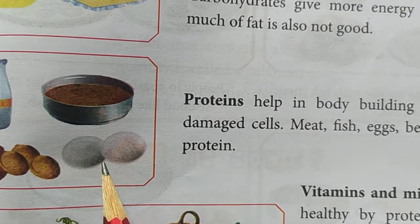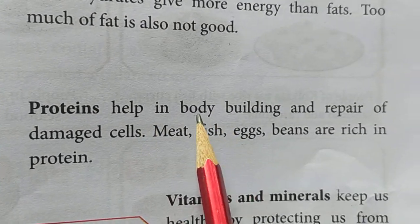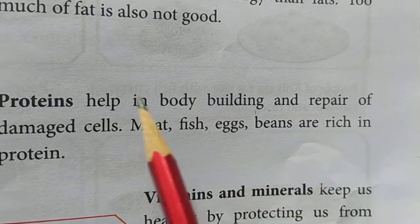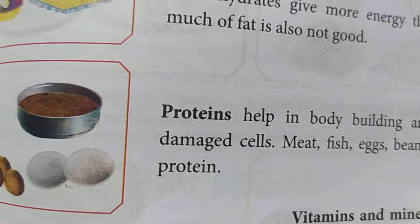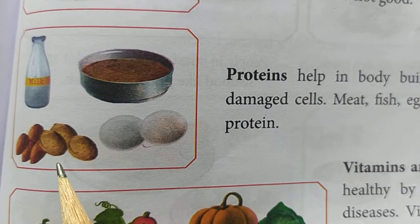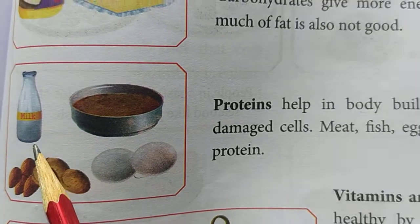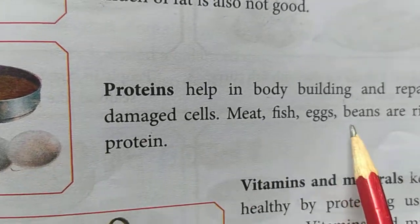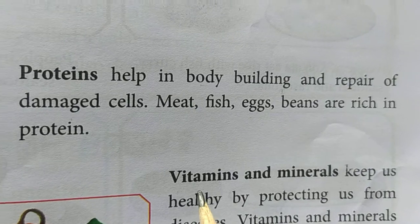And proteins — proteins help in body building and also repair damaged cells. In which food items can we get proteins? Milk, fish, eggs, and beans are rich in proteins.